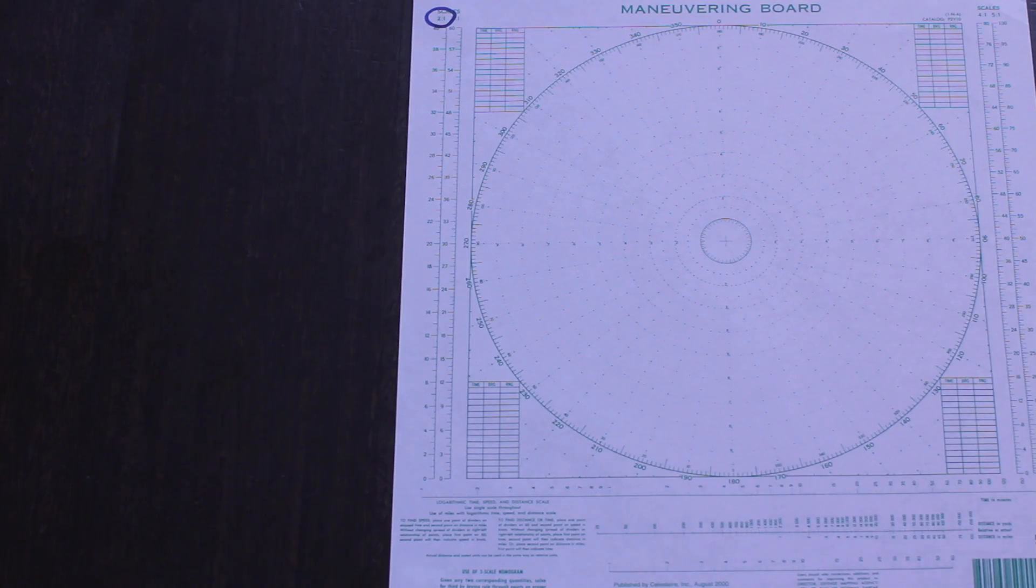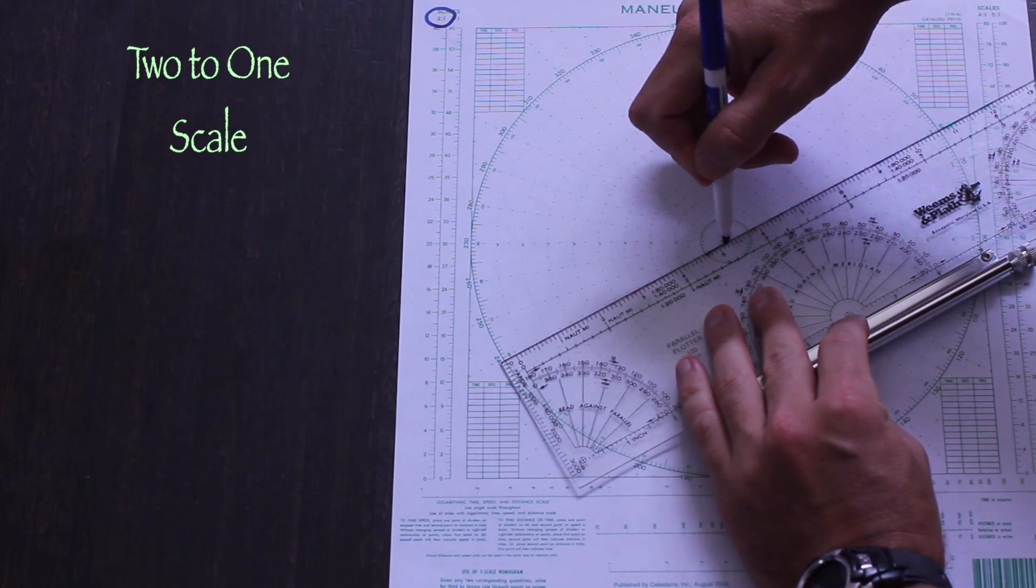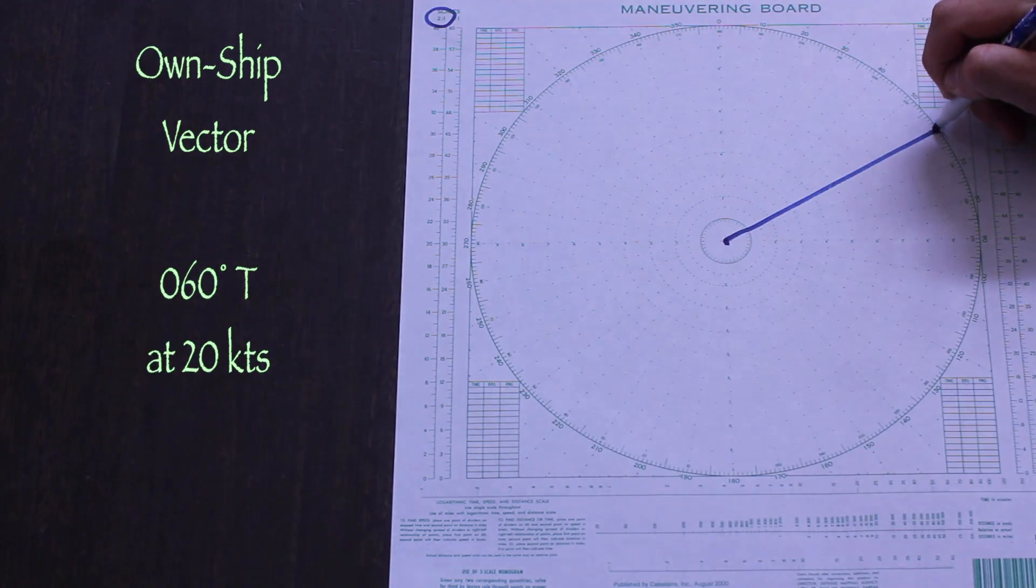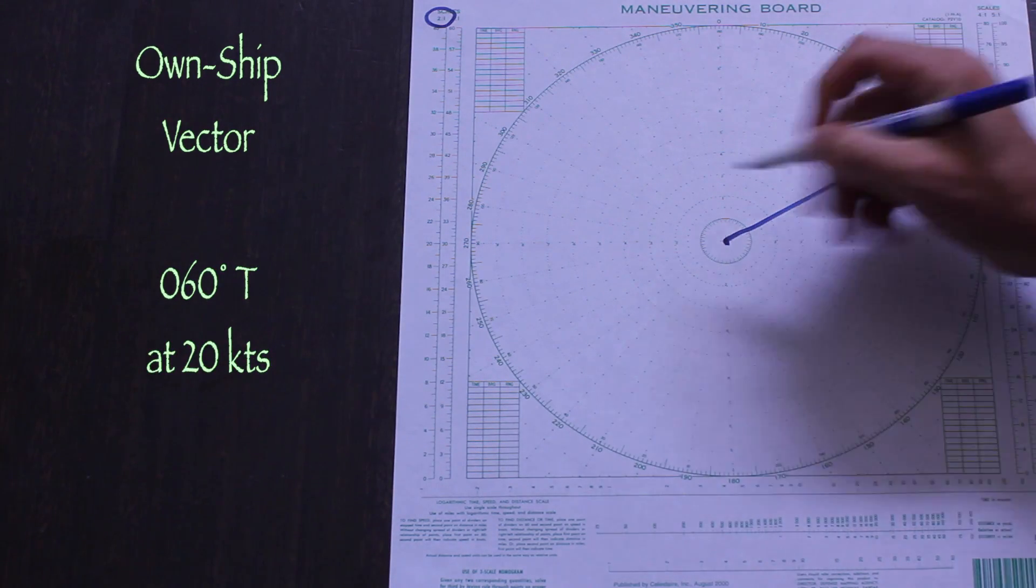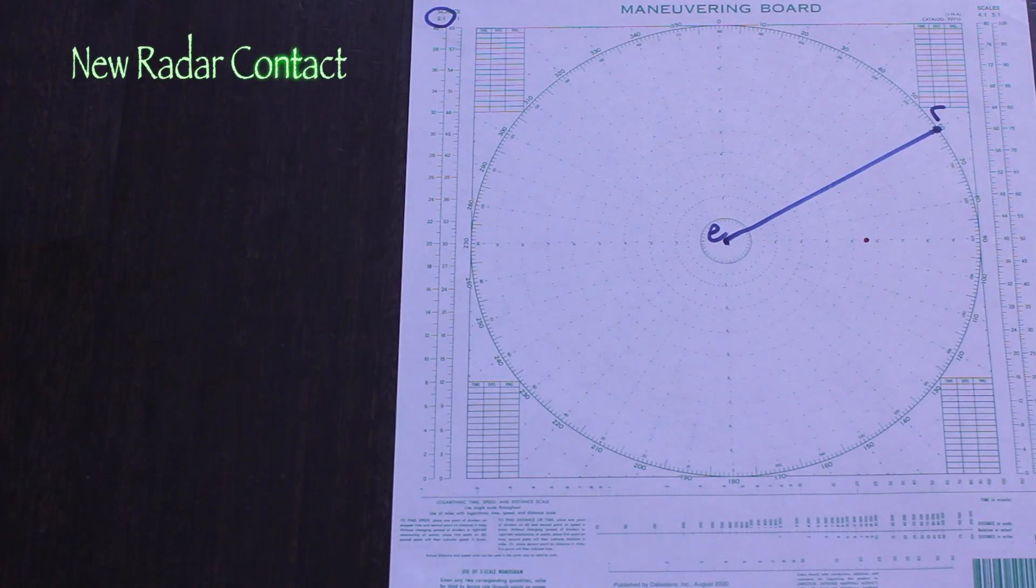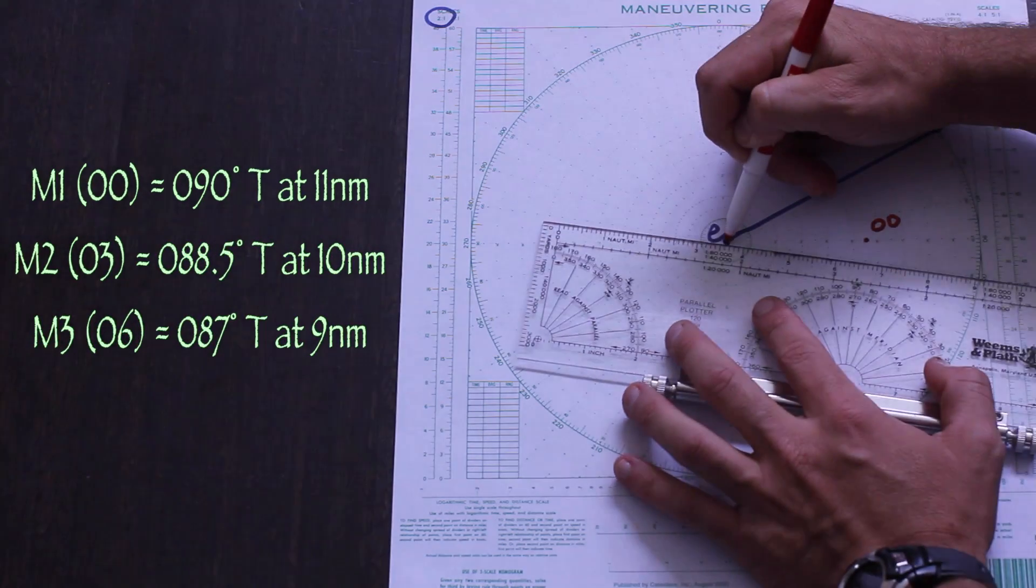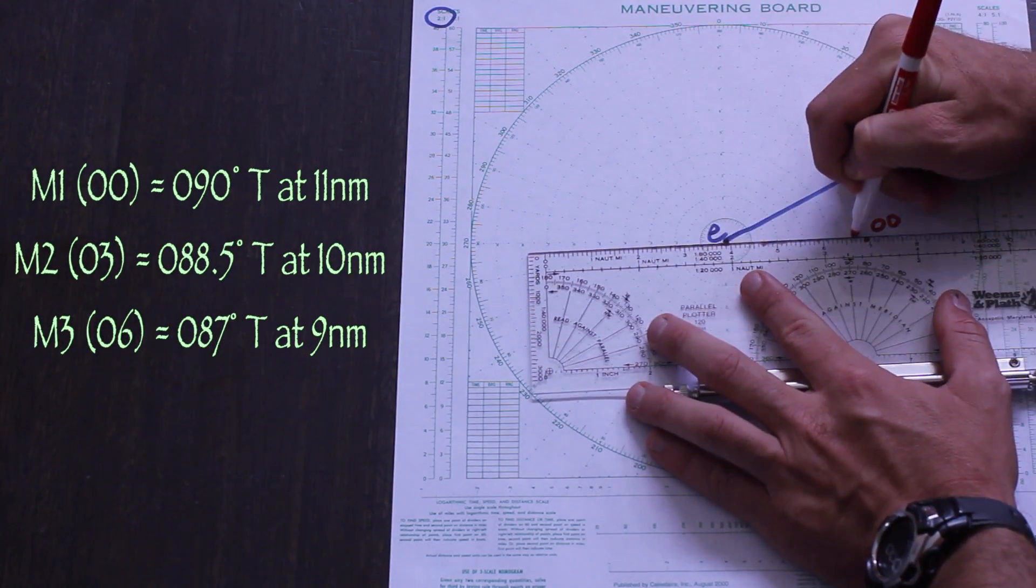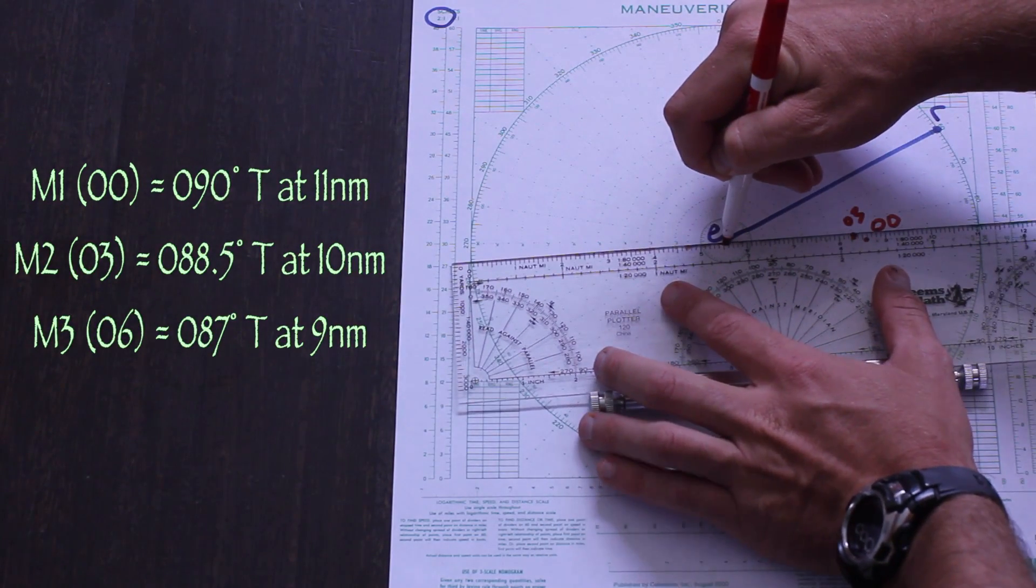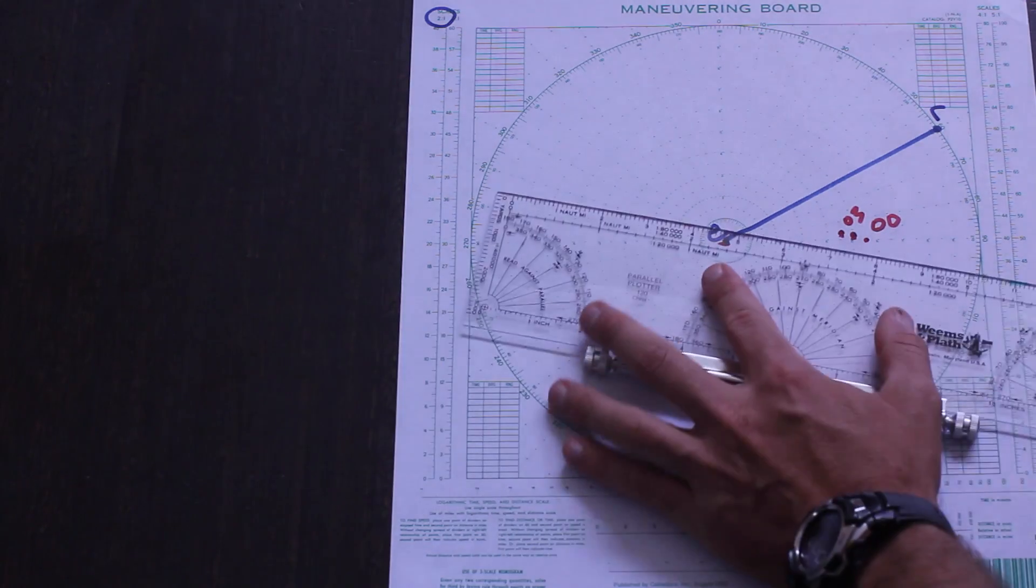So from soup to nuts, the first step is to plot your own vector, as well as the contact's positions. We're going to use a 2 to 1 scale in this case. Once we have three positions, we can draw the line of relative motion and determine the direction of relative motion and the speed of relative motion using the nomogram.